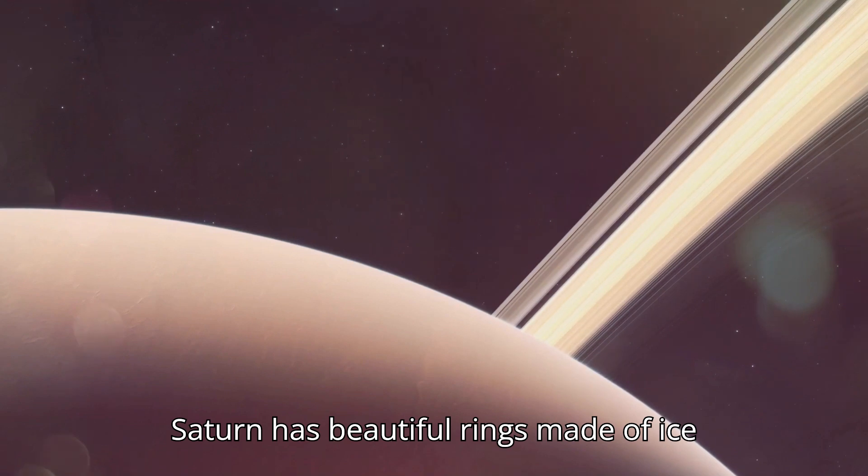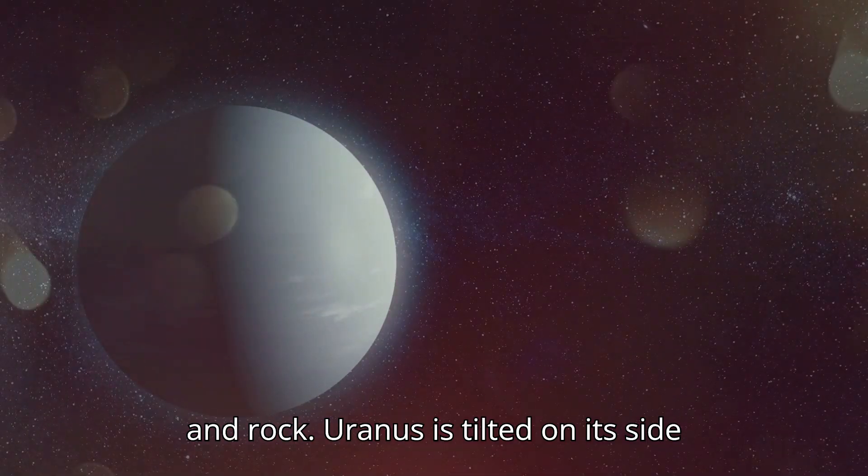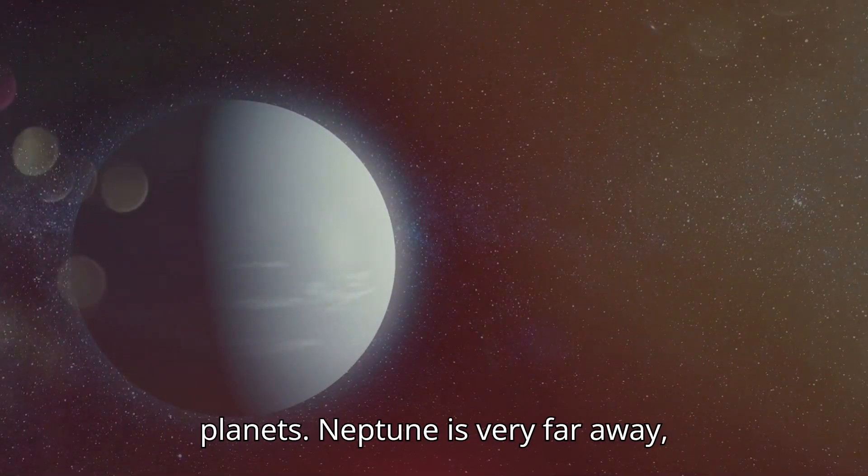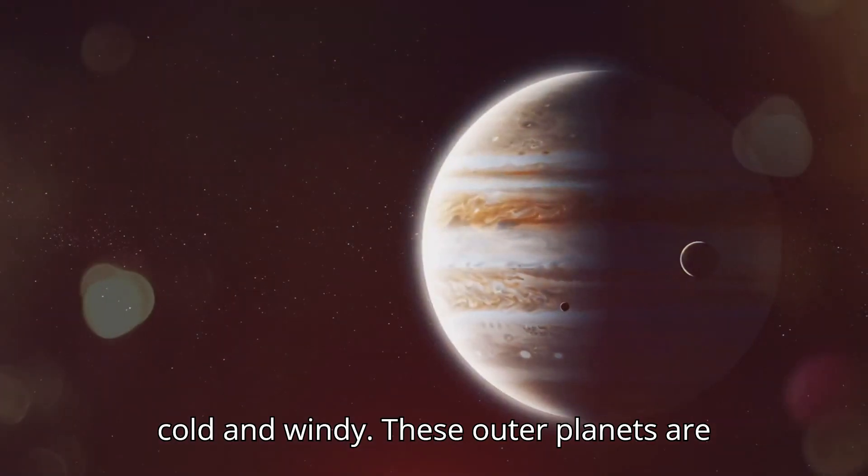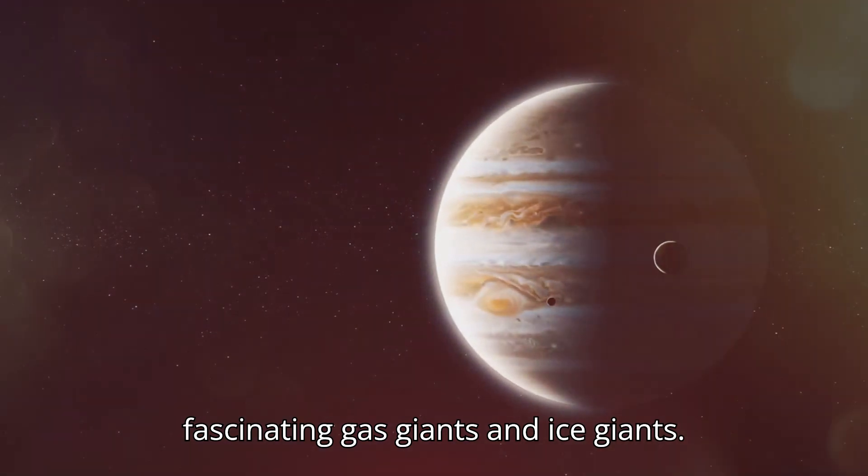Saturn has beautiful rings made of ice and rock. Uranus is tilted on its side and rotates differently than other planets. Neptune is very far away, cold and windy. These outer planets are fascinating gas giants and ice giants.